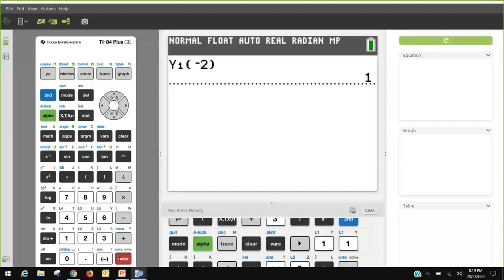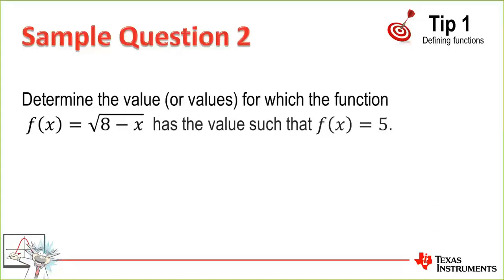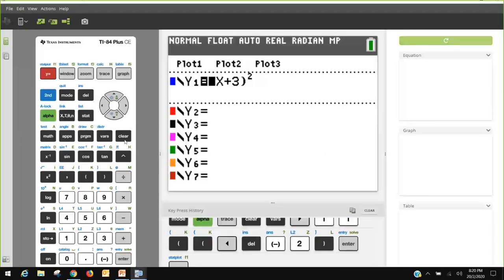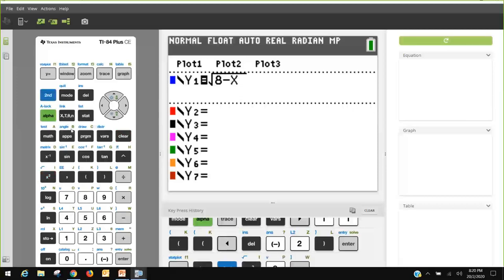Using alpha F4 is a bit quicker. We're asked to evaluate F of negative 2. Of course, for that example, students would actually just substitute it in, but for more complicated equations it's a good way to do it. In question 2, determine the value or values for which F of X equals 5. In this question, we're really being required to solve. I could solve directly, but you'll see as I work through the answer why it might be better to put it in as Y1.